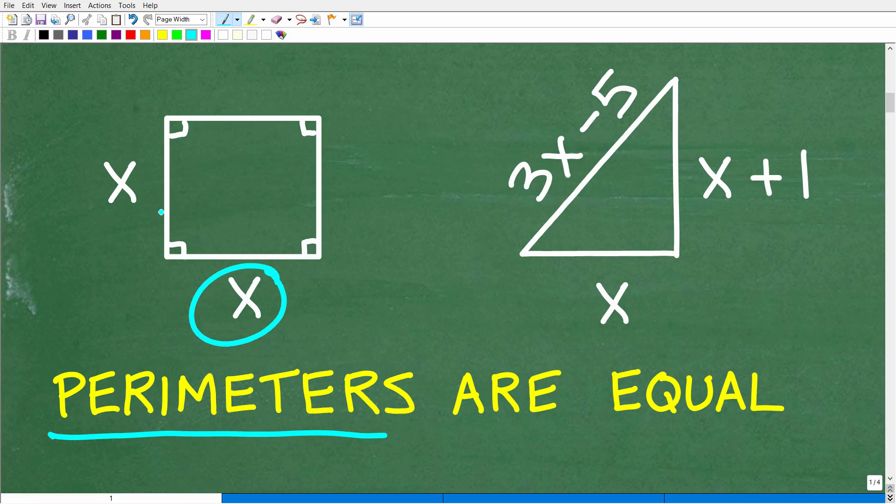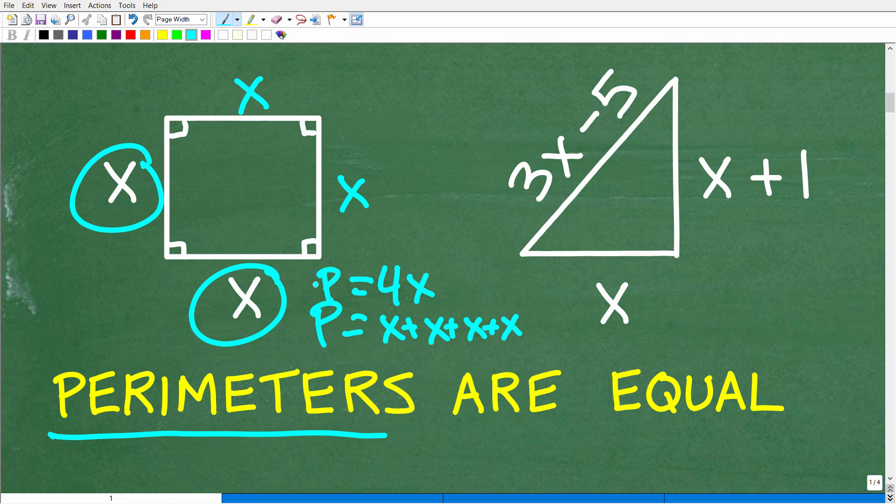It would be x plus x. This over here is another x, and this is x because a square, all sides are equal. So the perimeter of the square is going to be x plus x plus x plus x. That's a lot of x's to write. So we could just say it's 4 times x because we have 4 x's. That would be a better way to express the perimeter.